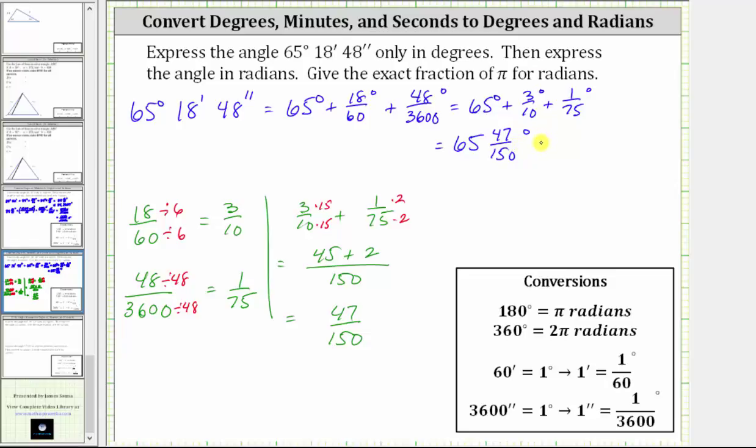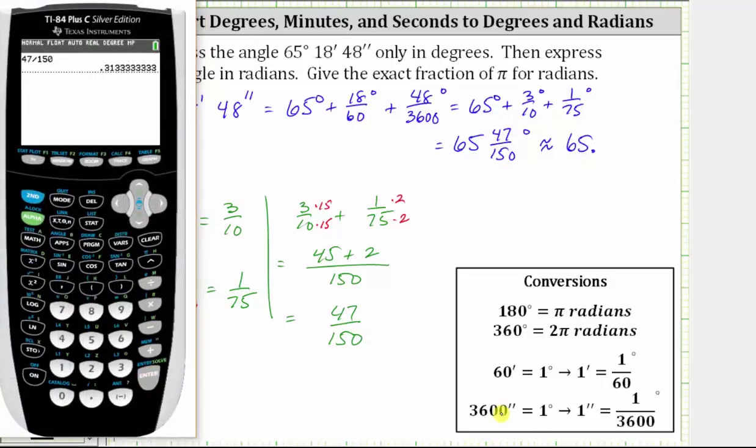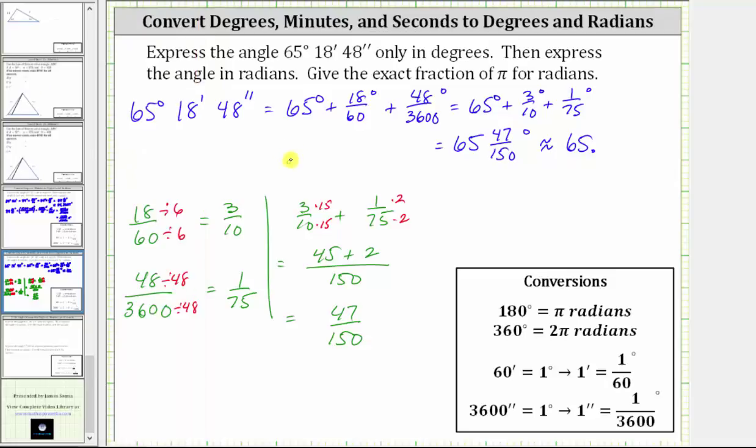Let's also express this using a decimal approximation. This will be equal to 65 point... To determine the decimal, we divide 47 by 150. If we round to four decimal places, 47 divided by 150 is approximately 0.3133. So the exact measure of the angle in degrees is here as a mixed number, and here we have a decimal approximation in degrees.